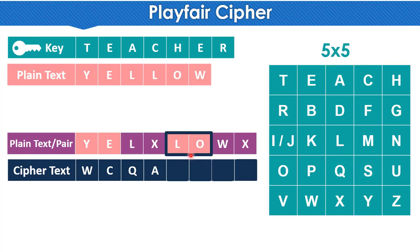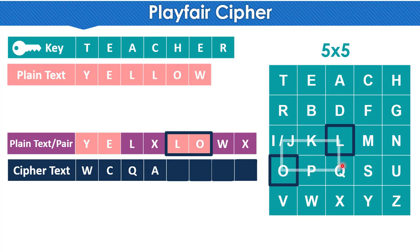Next pair is L and O. L is here in the table and O is here. These two are neither in the same row nor the same column, so we use the rectangle rule again. We form a square with L and O as corners. For L the opposite corner gives I (we use I not J), and for O the opposite corner gives Q. So L encrypts to I and O encrypts to Q.